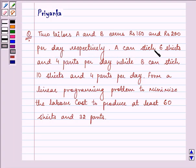A can stitch 6 shirts and 4 pants per day while B can stitch 10 shirts and 4 pants per day. Form a linear programming problem to minimize the labor cost to produce at least 60 shirts and 32 pants.